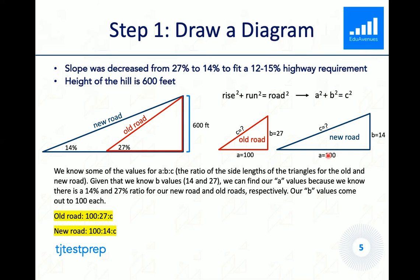we can find our a values, because we know that there's a 14% and 27% ratio for our new road and old roads, respectively. Our b value comes out to be 100 each. Therefore, the ratio for the old road is 100 to 27 to c.